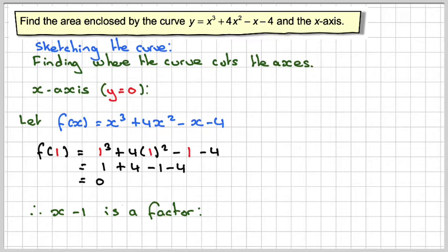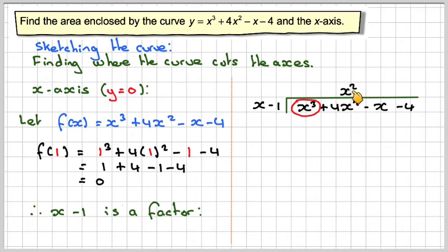And then we can do polynomial division to find the other factors. We're going to do x cubed divided by x, and that's going to be x squared. Then x squared times x is x cubed. x squared times minus 1 is minus x squared. And then we're going to do a subtraction.